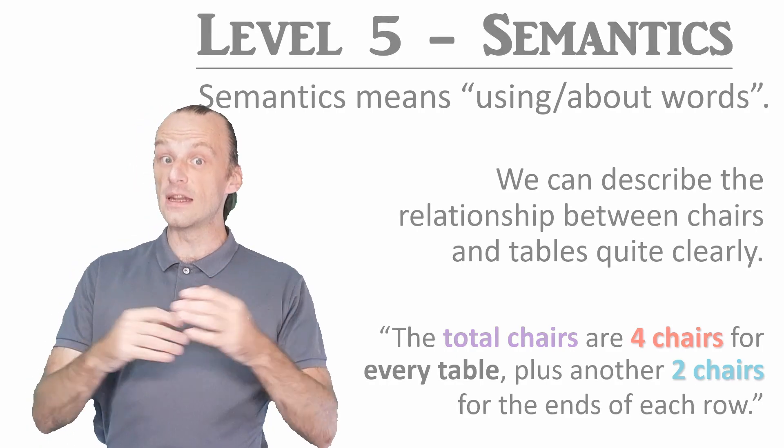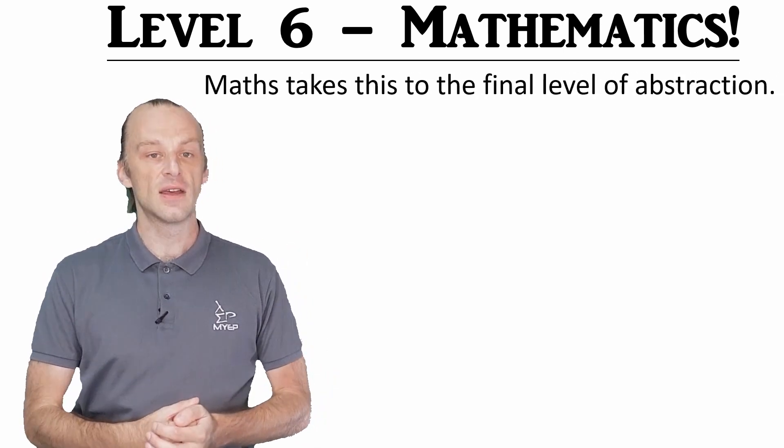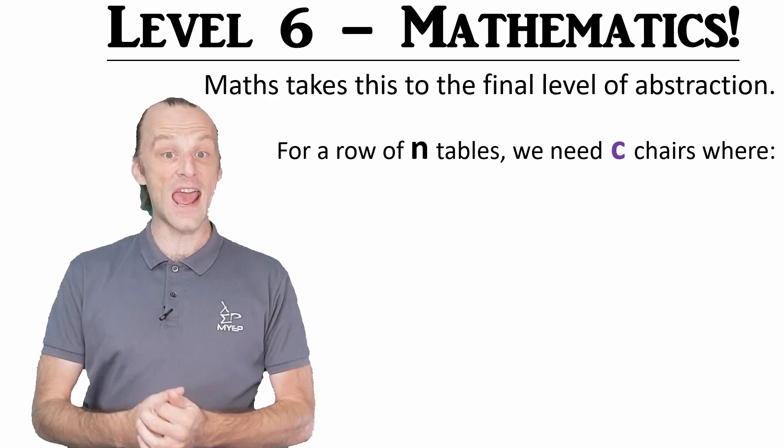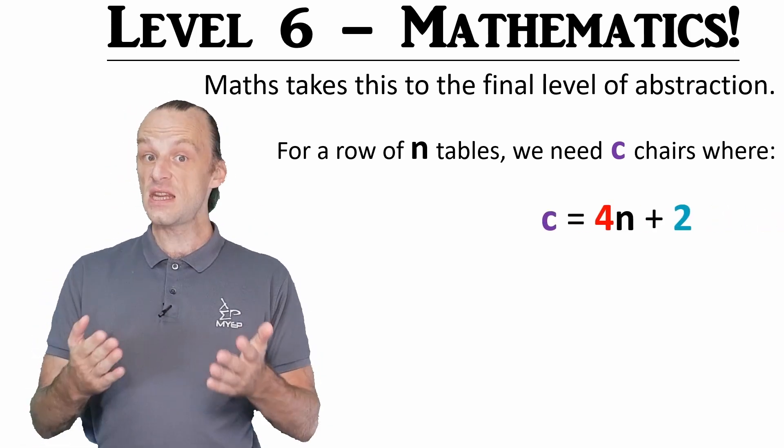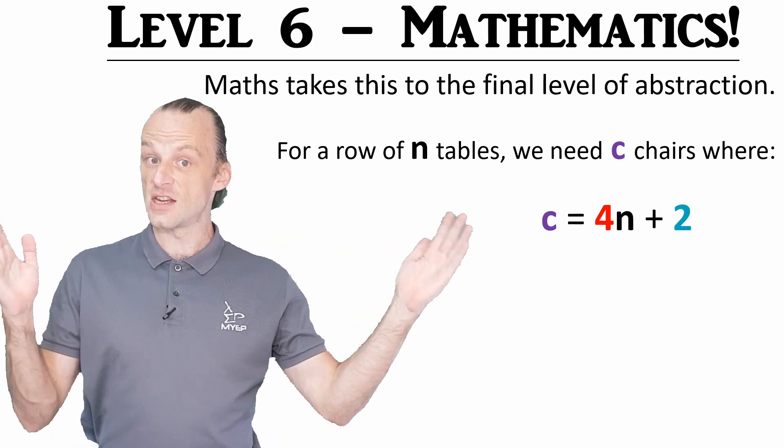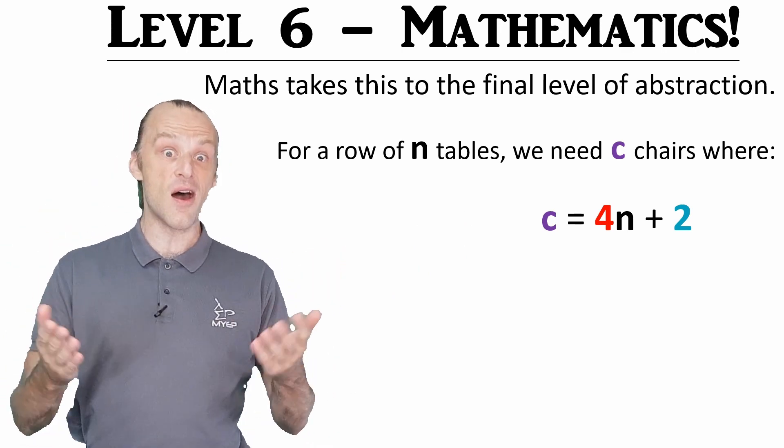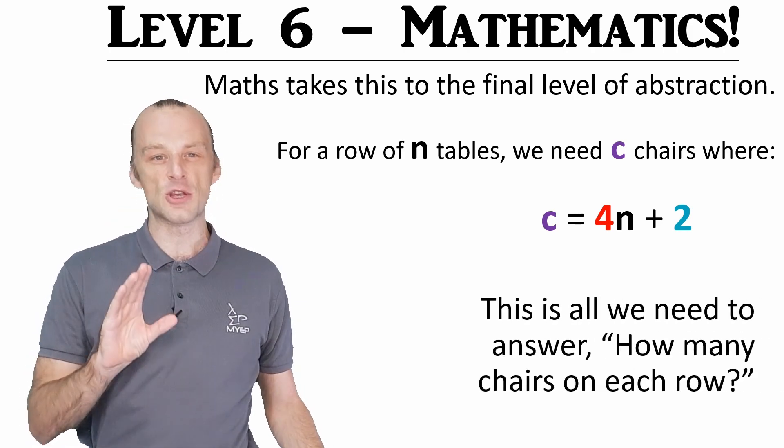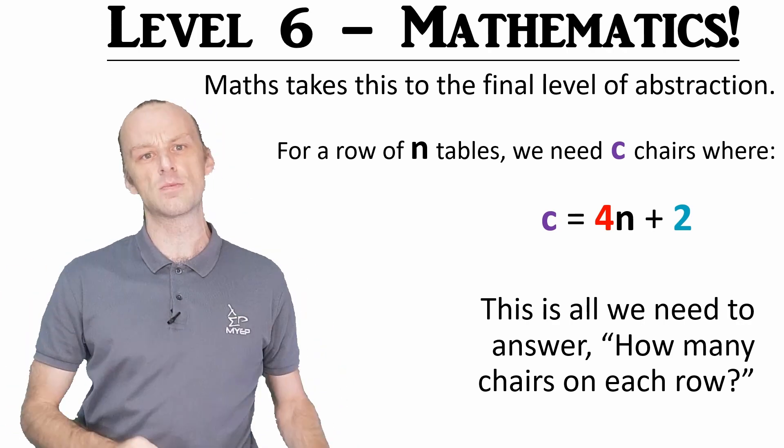At the final level of abstraction, at least for this video, maths is all that's left. The number of chairs, c, is an expression in one variable n, where n is the number of tables. C is 4 times n, for the number of tables, plus 2 for the end chairs. If we wanted, we could multiply this by r, the number of rows, but let's not for now. A basic algebra expression like this can count our chairs, but complex ones can do so much more.